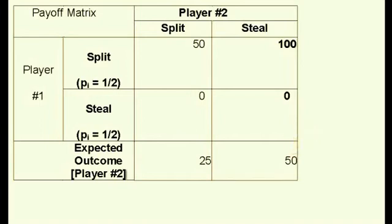We conclude that both players have it in their interest to choose steal. Of course, if both choose steal the payout will be 0. So the object of the game is not just to go with your highest expected outcome, but also to deceive the other person into making a different play so that you can achieve the actual outcome.